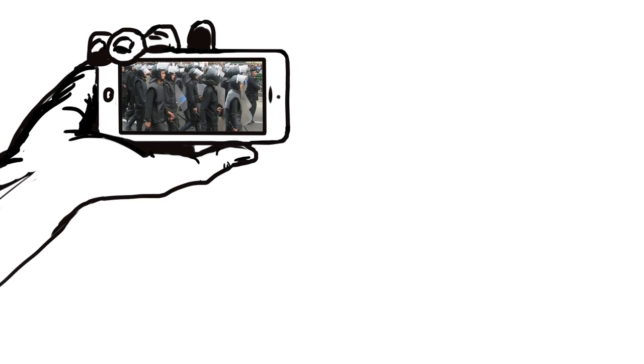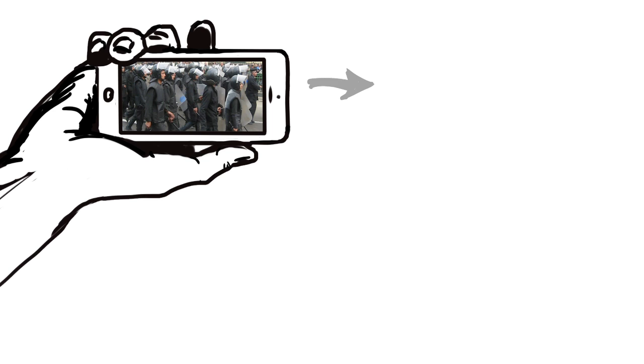Let's talk about Format. Normally, when we say Format, we are actually referring to two separate aspects of the video. The first is how the video data is represented digitally or encoded. This is called the codec.